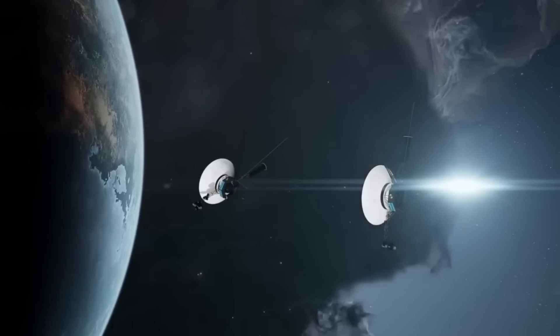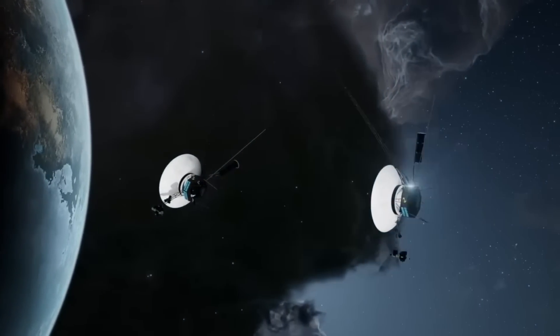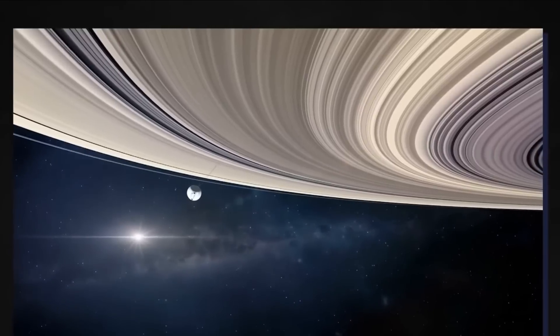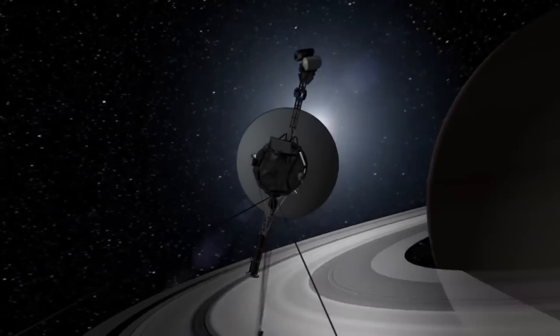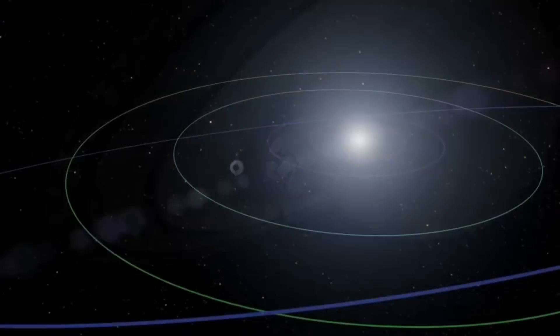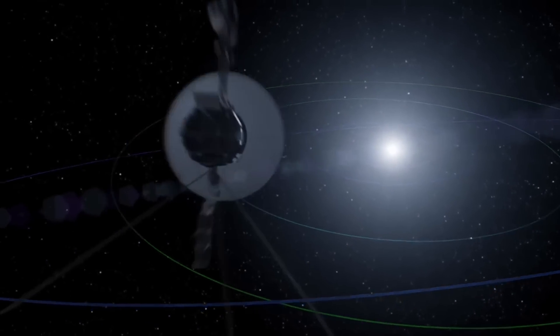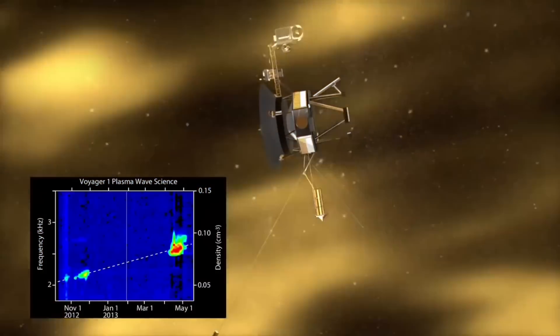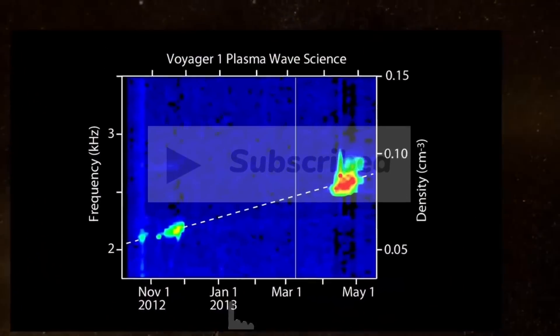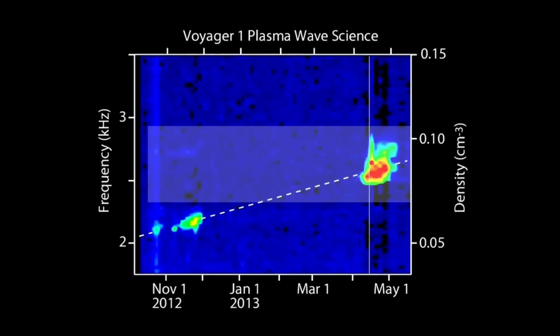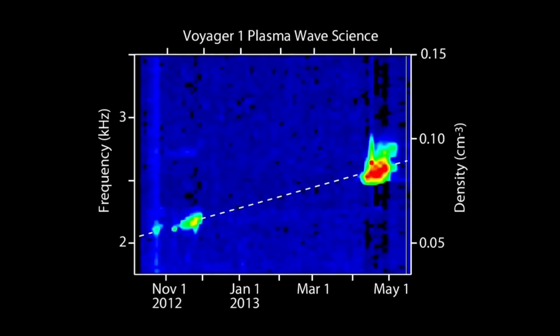After completing its mission at Jupiter, Voyager 2 continued its odyssey towards Saturn. In August 1981, it made its closest approach to the ringed planet, providing breathtaking images that revolutionized our understanding of Saturn's rings. The spacecraft captured the intricate structures and detailed features within the rings, including the complex braiding and gaps that were previously unknown.